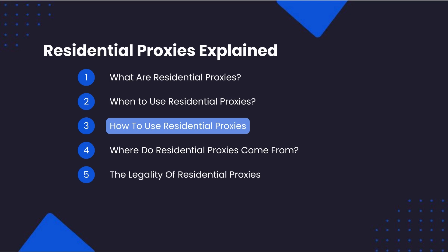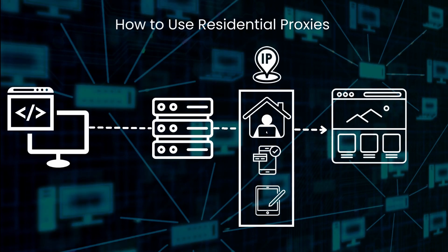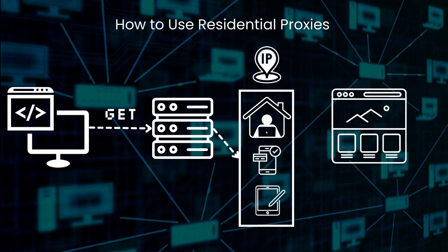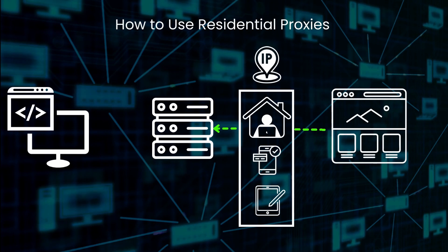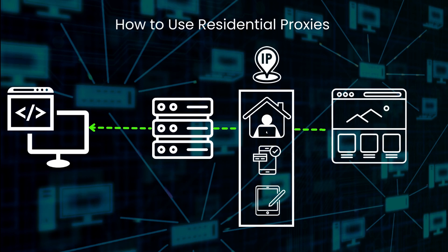Residential proxies are very easy to use. Most providers give you access to their residential proxy pools through a single endpoint proxy, and they manage the selection and rotation of those proxies on their end. You just need to send your requests to a proxy endpoint, like BrightData's, and they will route your request through their residential proxy network and return the HTTP response after the request has been completed. No need to worry about rotating proxies or managing bans, etc.